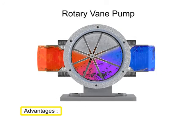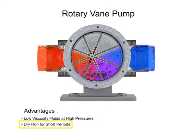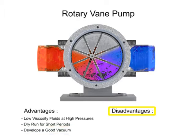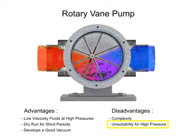The advantages of vane pumps are that they can handle low viscosity fluids at relatively higher pressures, can dry run for short periods, and develop a good vacuum. Their disadvantages include complexity and their unsuitability for both high pressure and high viscosity fluids.